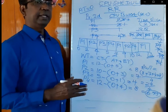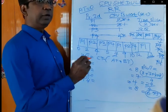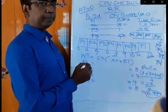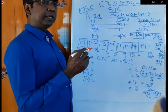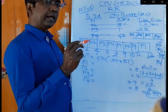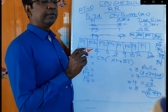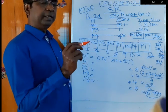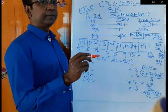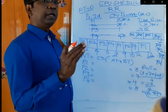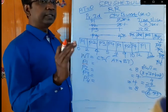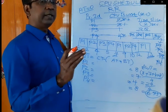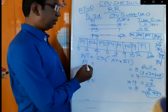Logically, we can also calculate the waiting time for each process. Waiting time is the time a particular process is spending in the ready queue only and not in the CPU. That means we should not count the time the process is spending in the CPU — only the time in the ready queue, after its arrival and before its completion. Let us see this logically for process P1.